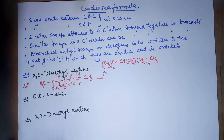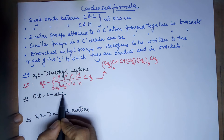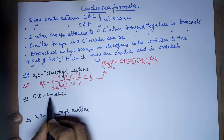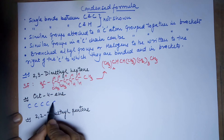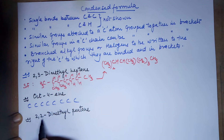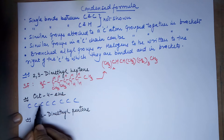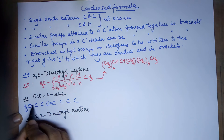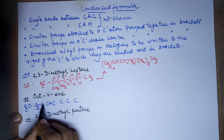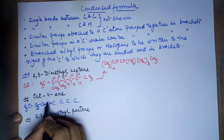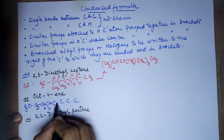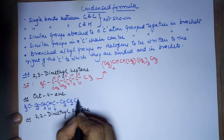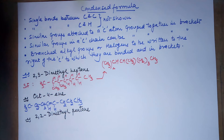The second example is oct-4-ene. 'Oct' means there are eight carbons, '-ene' means there is a double bond, at the fourth position. So your structure would be: one, two, three, four, five, six, seven, and eight — numbered from one end, with a double bond at the fourth position — satisfying the hydrogens: CH3, CH2, CH2, then CH=CH, then CH2, CH2, CH2, and a CH3.